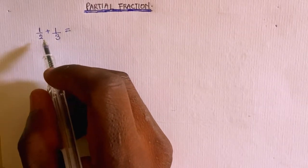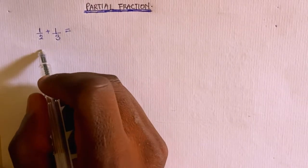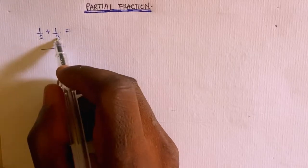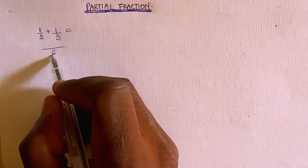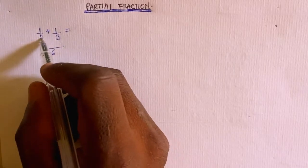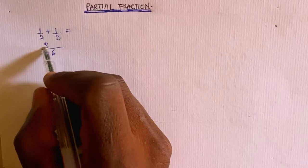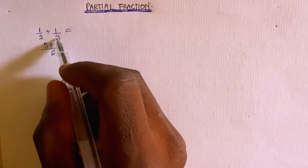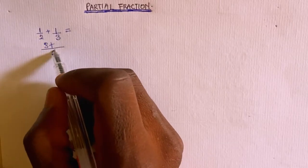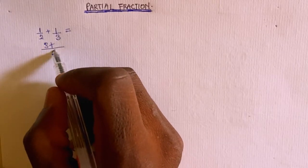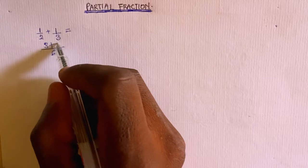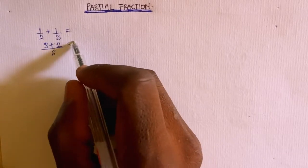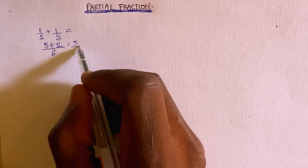You find the LCM of 2 and 3, and the LCM is going to be the product, which is 6. Then 2 goes into 6 three times giving 3, and 3 goes into 6 two times giving 2. So 3 plus 2 is 5, and you have 5 over 6.